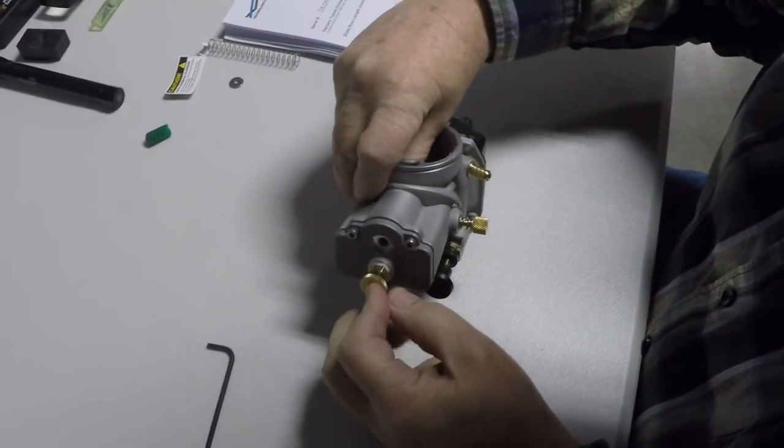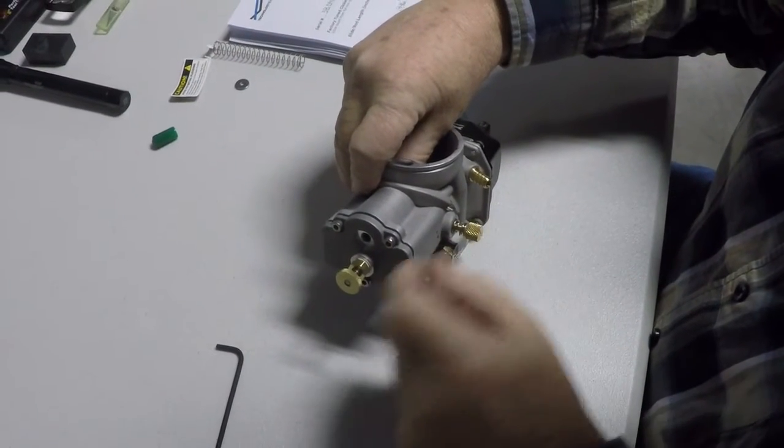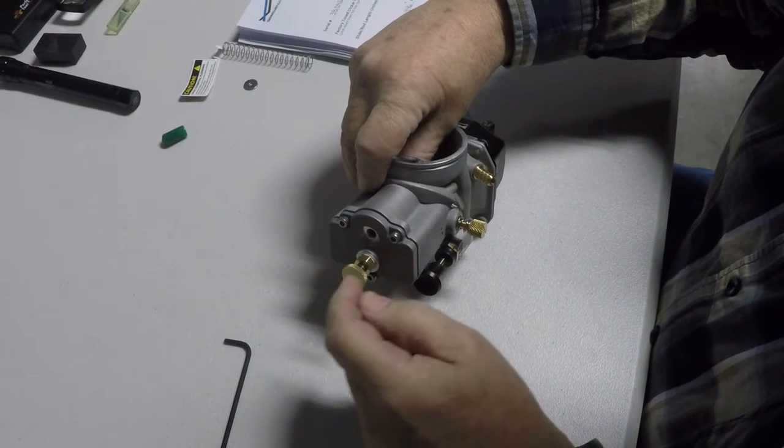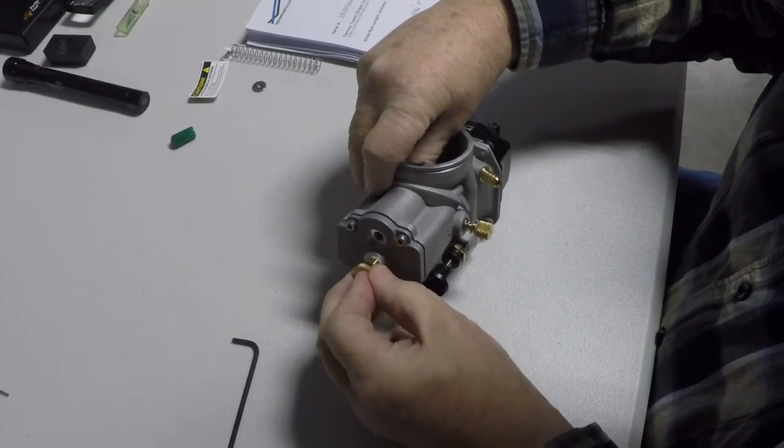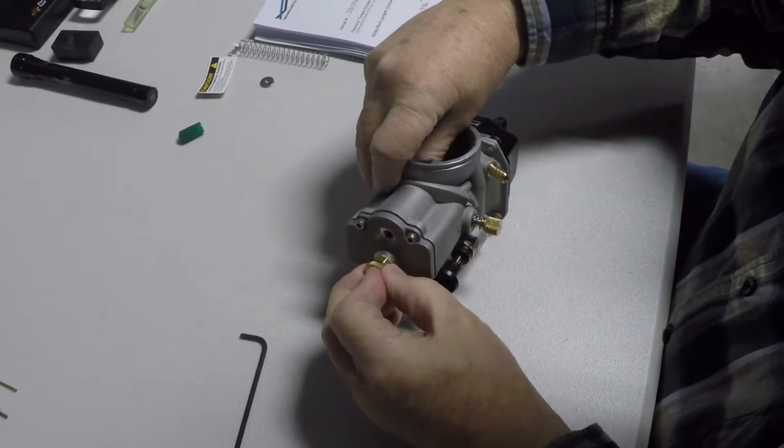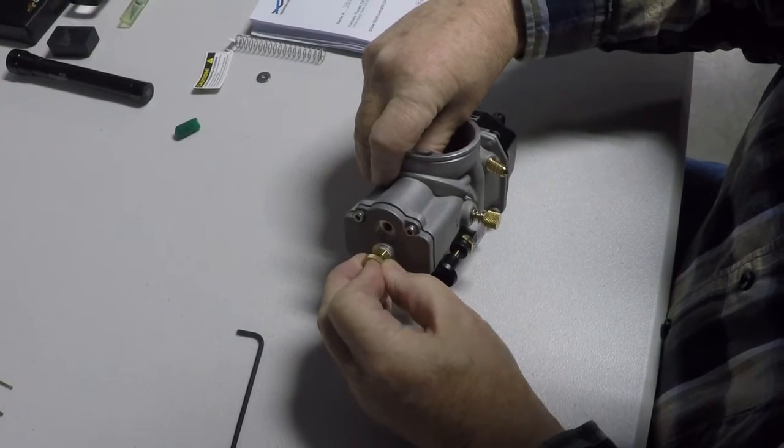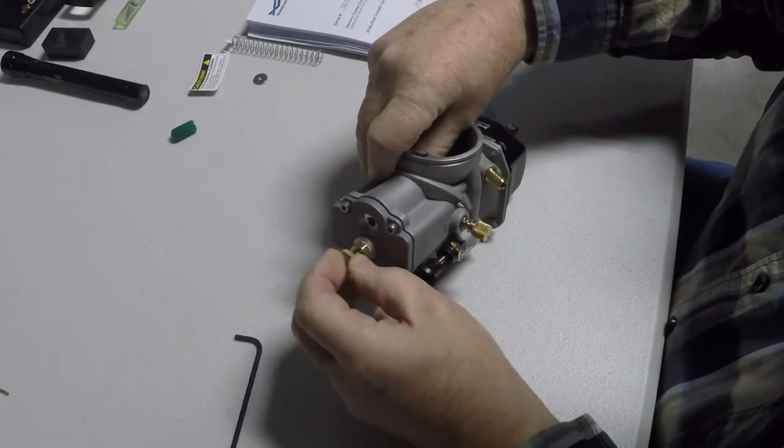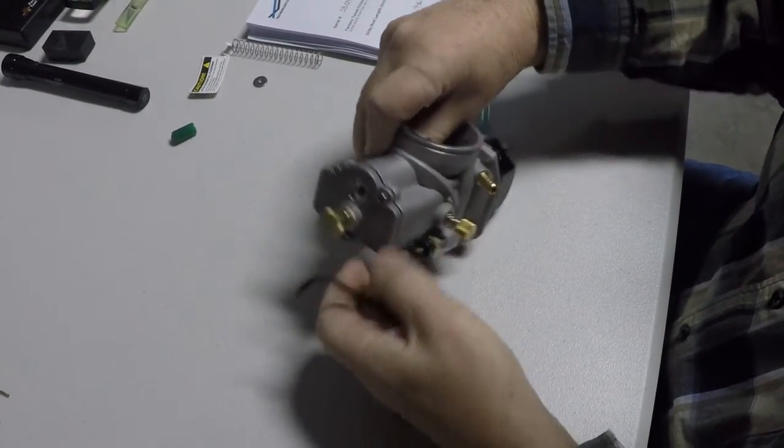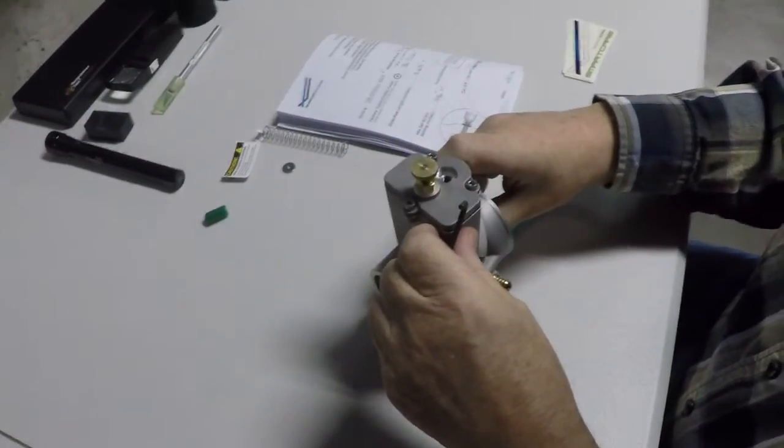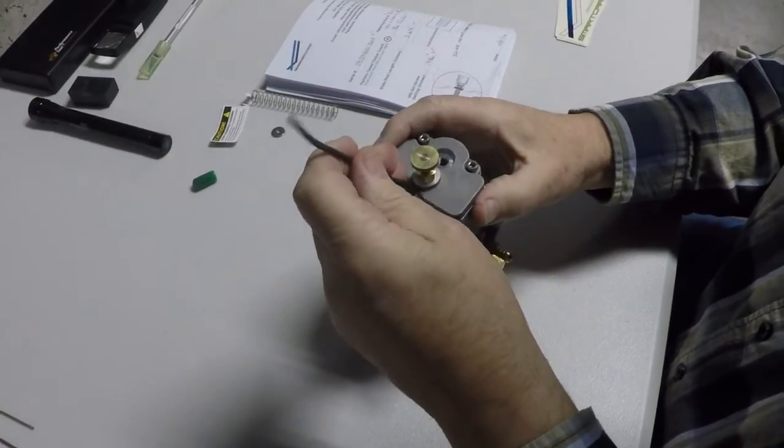There isn't anything else. You can play a little bit with the idle screw setting, but basically, that's all there is to it. You can do this on your bike, out in the middle of nowhere, no tools. That's one of the nice things about this.